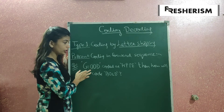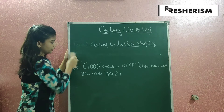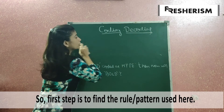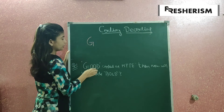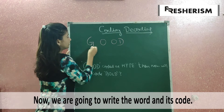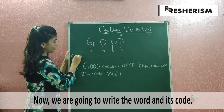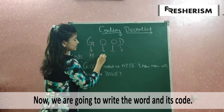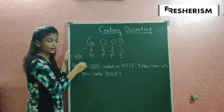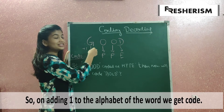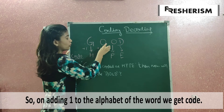If the code of 'good' is HPPE, then how will you code 'bold'? We have to first find the rule or pattern from which 'good' is coded as HPPE. Write the word, place a downward arrow, and write the code HPPE below it. From G to H, you add 1. G plus 1 is H. If I add plus 1 with O, I get P.